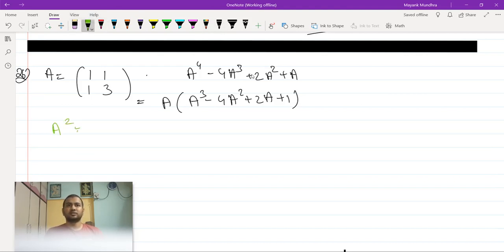First I need A square here so A square is [[1,1],[1,3]] times [[1,1],[1,3]] so that will come out to be [[2,4],[4,10]].